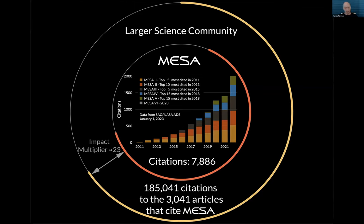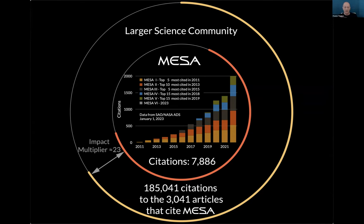MESA is just one part. If you take your bibliometrics and go one circle out and ask how many citations do the articles that cite MESA get — in other words, how valuable is it to the larger community for the people who are using MESA directly for their science — there are approximately 185,000 citations to the 3,000 articles that cite MESA. This gives an impact factor, a multiplier, of about 23 for every article published citing MESA.